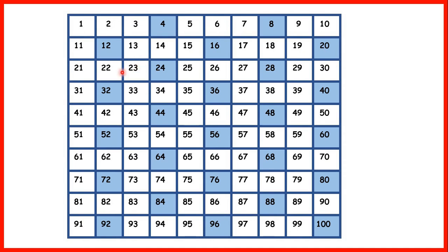We can see the 4 times table written out on a 100 square. Every number in the 4 times table is an even number, so ends in a 2, 4, 6, 8, or 0. If we show our 8 times table — our multiples of 8 — on the 100 square, you can see we get a similar pattern. Every multiple of 8 also ends in a 2, 4, 6, 8, or 0. So multiples of 8 are always even numbers as well. And all of these highlighted numbers we also had highlighted when we showed our 4 times table — so every multiple of 8 is also a multiple of 4.